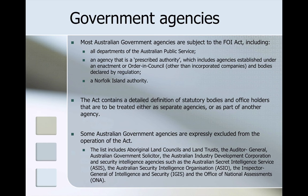Most Australian government agencies are subject to the Freedom of Information Act, including all departments of the Australian Public Service, agencies that are prescribed authorities — which includes agencies established under an enactment or order in council — bodies declared by regulation, and Norfolk Island authorities. Some Australian agencies are expressly excluded from the operation of the Act, including Aboriginal land councils and land trusts, the Auditor General, the Australian Government Solicitor, the Australian Industry and Development Corporation, and — significantly — security intelligence agencies such as ASIS, ASIO, IGES, and the Office of National Assessments.